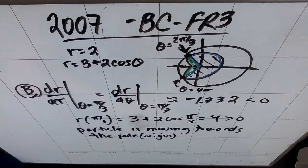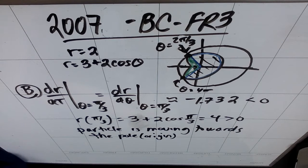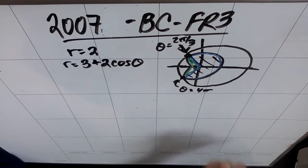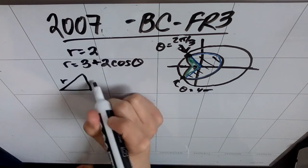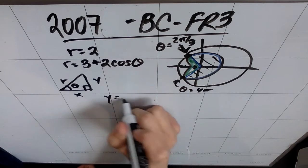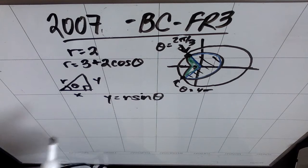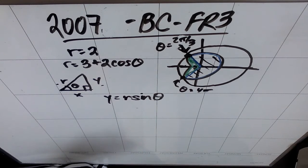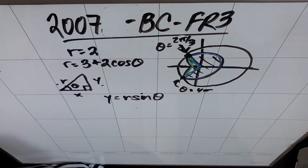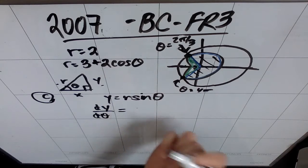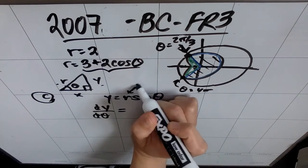Part C: for the particle described in Part B, dy/dt equals dy/dθ. Find the value of dy/dt at theta equals pi over 3, and interpret your answer in terms of the motion of the particle. Remember the relationship between polar and Cartesian: y equals r sine theta, and x equals r cosine theta — essentially SOH-CAH-TOA, since sine of theta equals opposite over hypotenuse equals y over r. So y equals r sine theta. Now, dy/dθ is not something you can find in your calculator explicitly in polar mode.